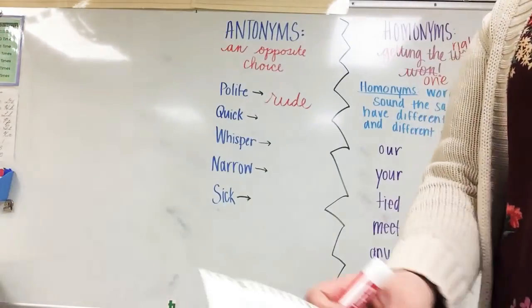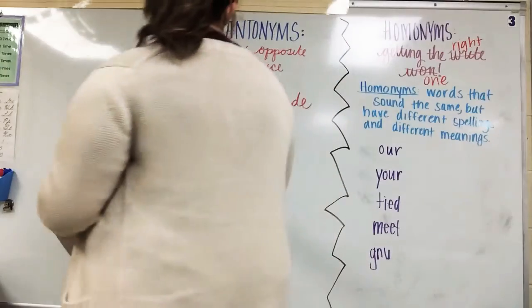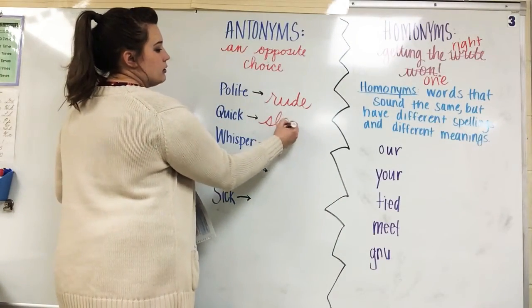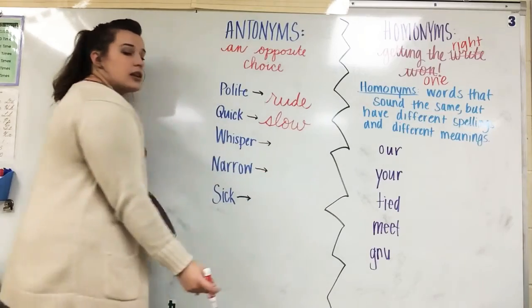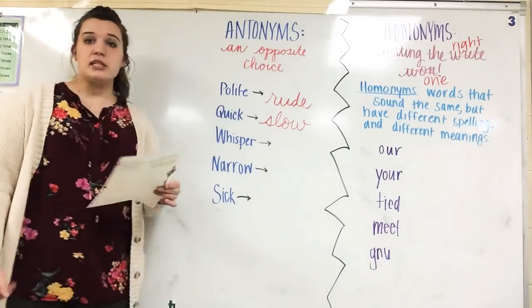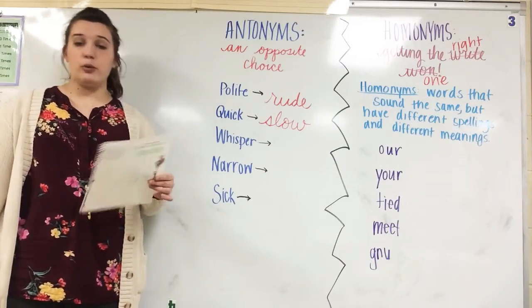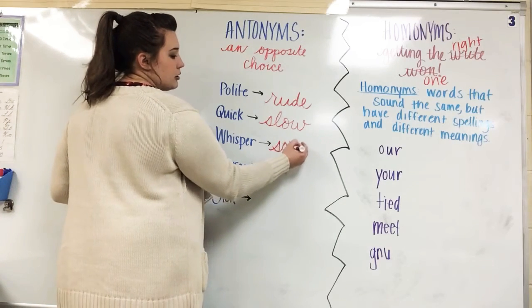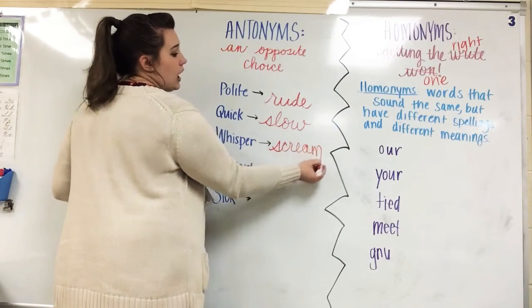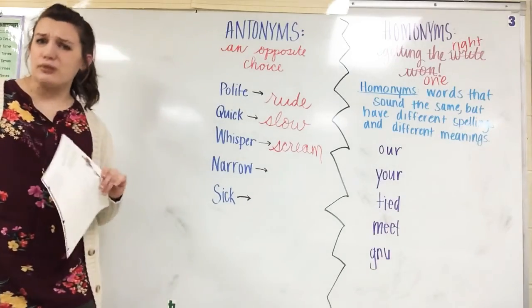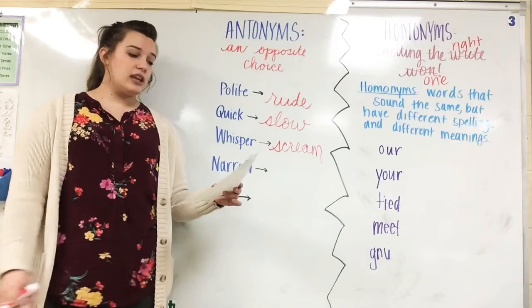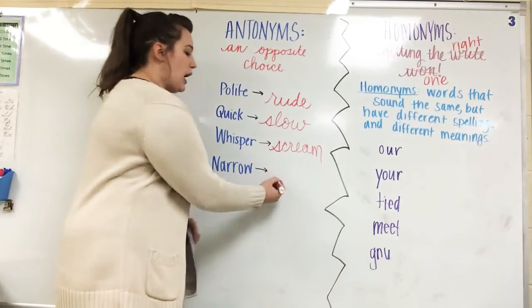Let me make sure I give you the right word. The opposite of quick would be slow. The opposite of whisper — the antonym of whisper — would be to scream. I know this is so hard, it's really stretching your brains. The opposite of narrow, or the antonym of narrow, is wide.